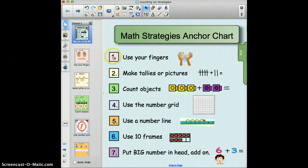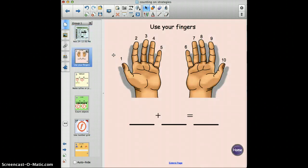So let's try the first one. It says use your fingers, so you click on number one and it brings you right to that page. Then the students can see, if I look at my hands like this, the thumb will be one, then the first finger - two, three, four, five, six, seven, eight, nine, ten.